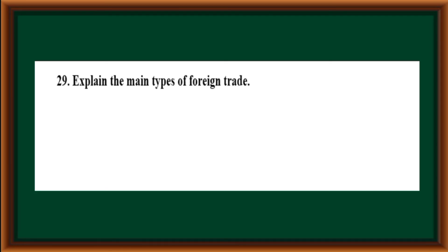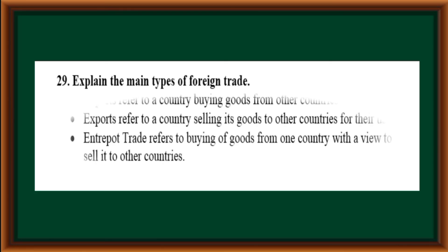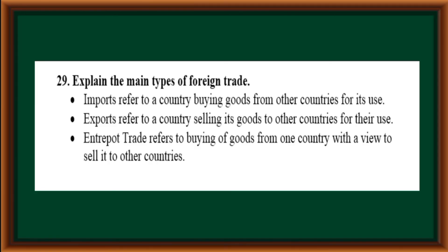Explain the main types of foreign trade. First, imports: a country buying goods from other countries for its use. Second, exports: a country selling its goods to other countries for their use. Third, entrepot trade: buying goods from one country with the view to sell them to other countries.